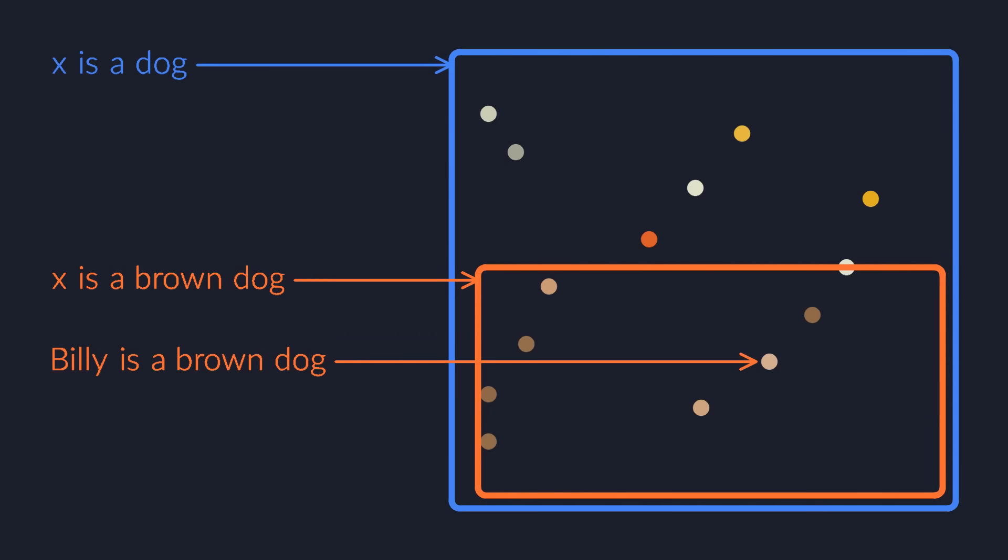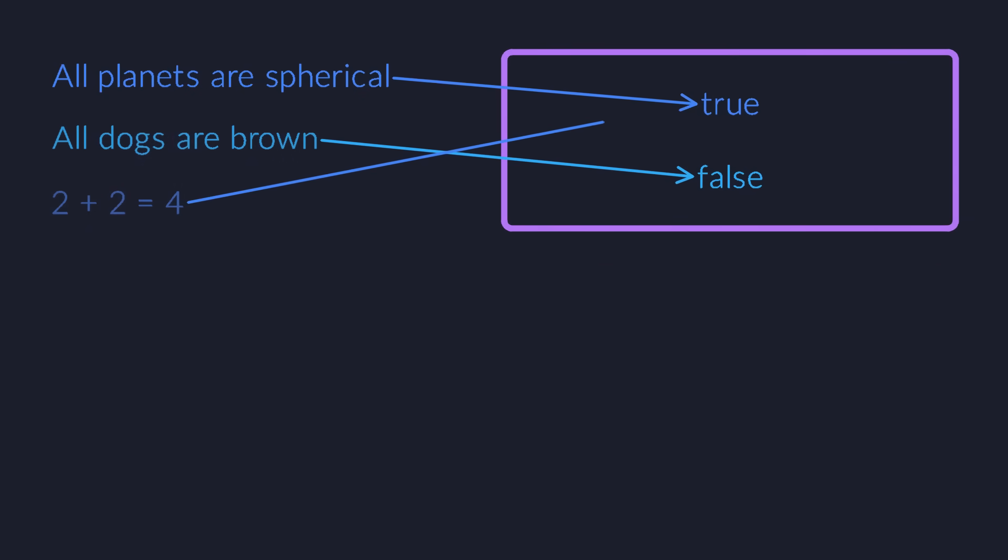The mappings don't always have to be so complicated. The easiest kind of mapping simply assigns a value of true or false to all of the simplest sentences. Then, as you construct bigger sentences from smaller ones, you use truth tables to look up the resulting value for the larger sentence.